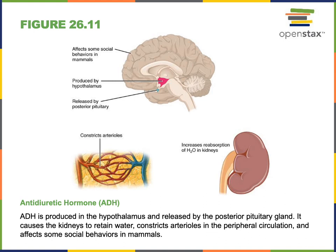The name antidiuretic hormone comes from its function in the kidneys, where it increases the reabsorption of water, causing the volume of urine to decrease. A diuretic is a drug or chemical that causes urine volume to increase. For example, alcohol is a diuretic — it works by inhibiting the secretion of antidiuretic hormone, disrupting the signaling that would normally decrease urine volume, so alcohol acts as a diuretic by increasing urine volume.